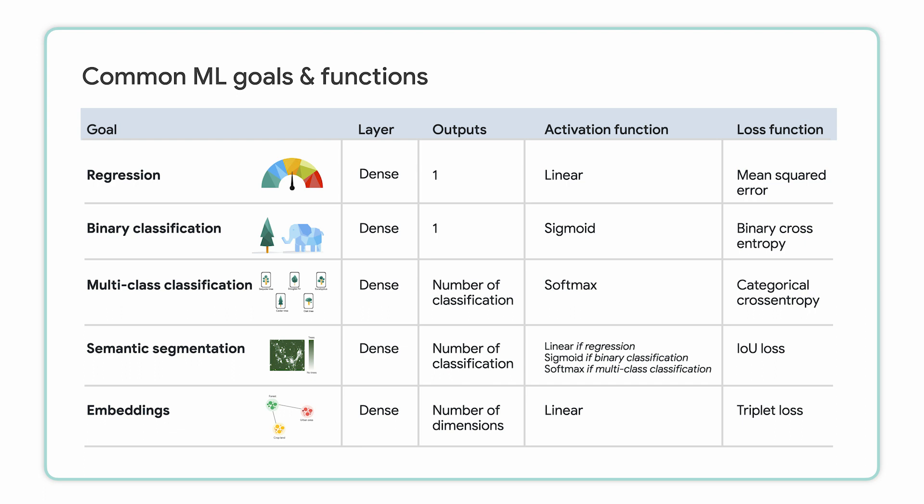For our use case, because we use binary semantic segmentation, we choose to use a dense layer with a single output at that last layer. This helps classify every pixel in satellite images with a value between 0 and 1. We also choose a sigmoid activation function and an IOU loss function.